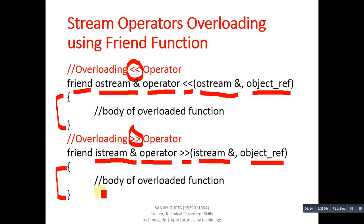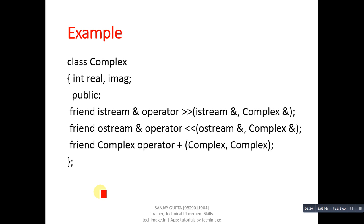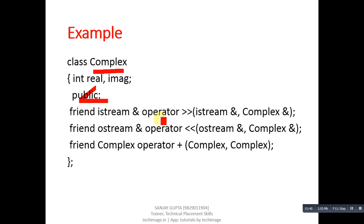For stream operator overloading we have to use these predefined classes. Now I am going to explain this syntax with the help of an example. Here a complex class is defined in which real and imaginary, two attributes, are declared. The first method, which overloads the extraction operator, is declared as: friend istream reference, operator keyword, extraction symbol.